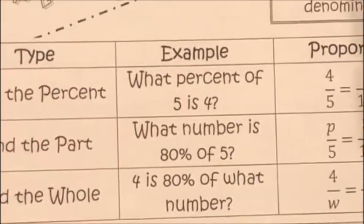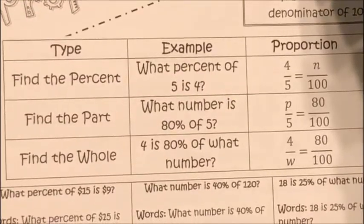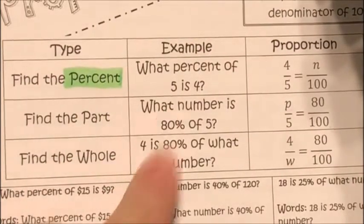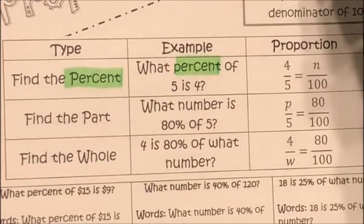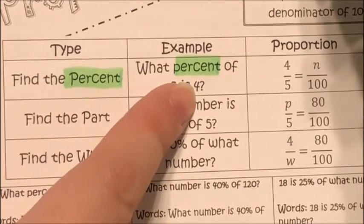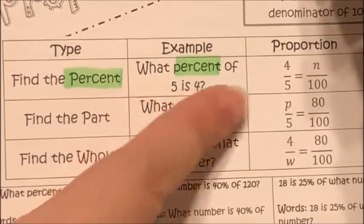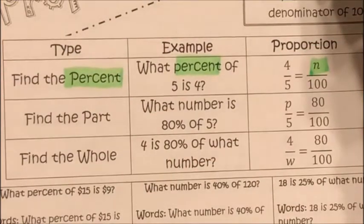Here's a little chart for finding a proportion. If I'm finding a percent — the keyword is 'what percent' — for example, what percent of five is four? I write four over five, and n over a hundred, where n stands for the percent.